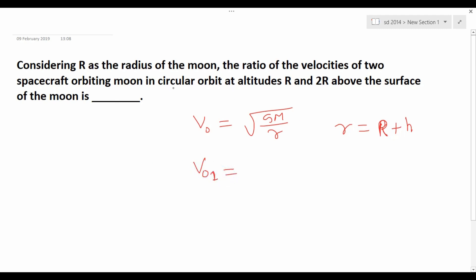The first one is at altitude R. Then V orbital 1 is GM divided by - this R plus altitude R - so R plus R is equal to the square root of GM by 2R.